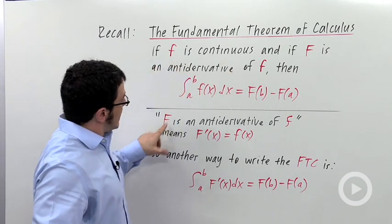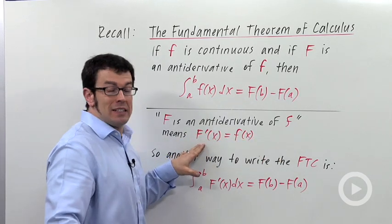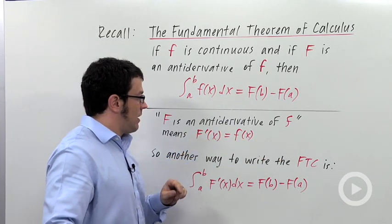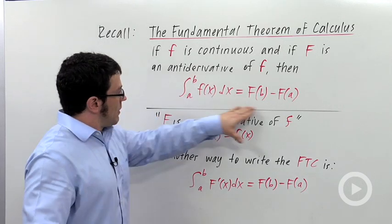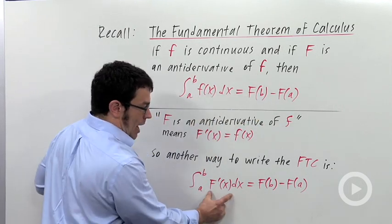First, this phrase, F is an antiderivative, capital F is an antiderivative of little f means capital F prime equals little f of x. So you can rewrite the fundamental theorem in the following way. Just replace the little f of x with capital F prime.